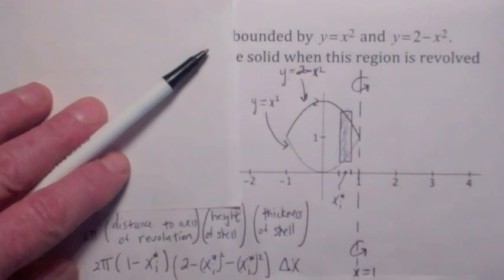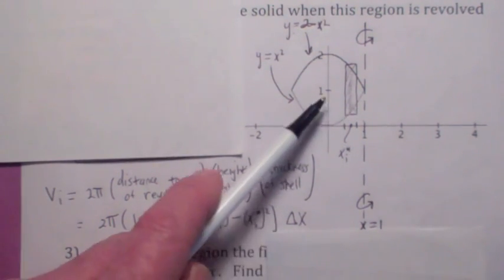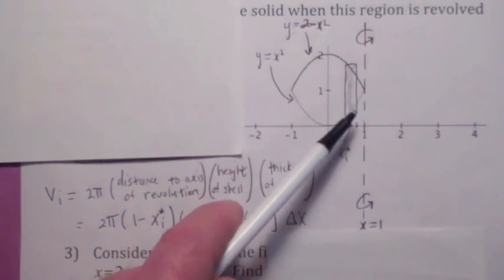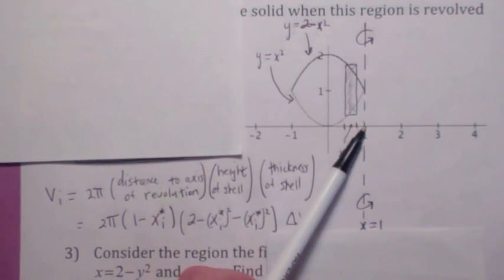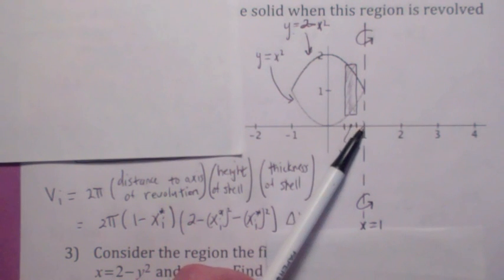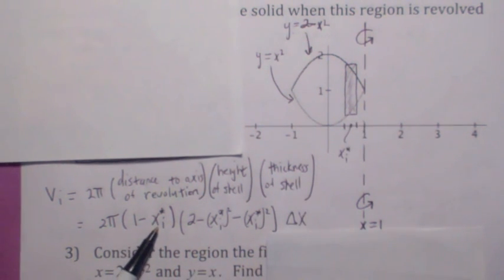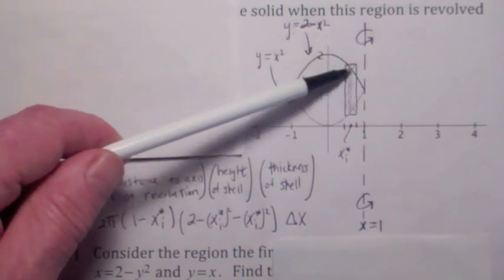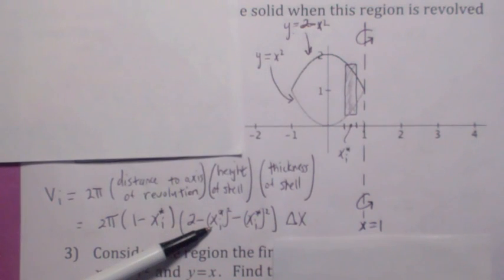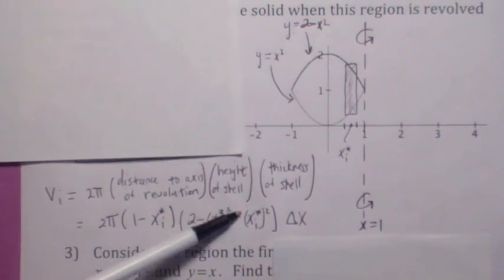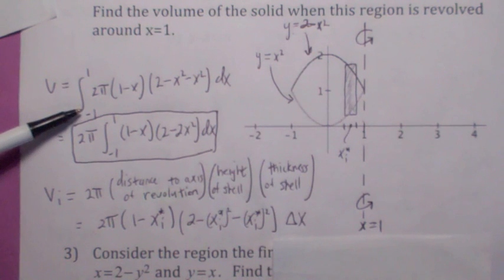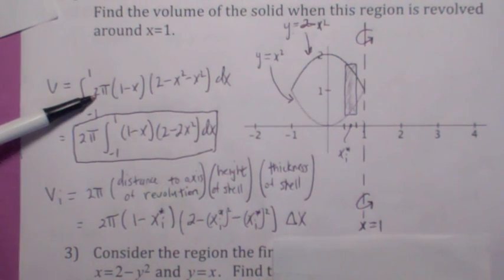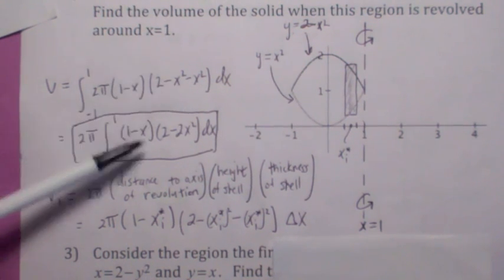The volume of the shell when you revolve this rectangle around x equals 1 is 2π times the distance to the axis of revolution. What is the distance from x sub i star to 1? If the whole distance is 1 and from here to here is x sub i star, then the distance from x sub i star to the axis of revolution is 1 minus x sub i star. The height of the shell is the difference in the two functions: 2 minus x sub i star squared minus x sub i star squared, and the thickness is Δx.